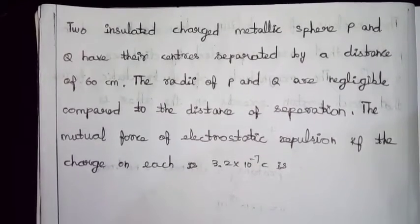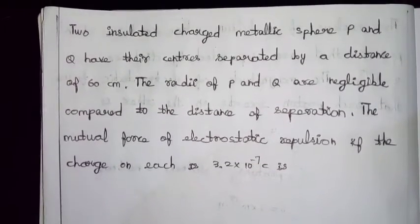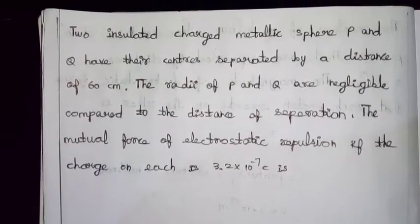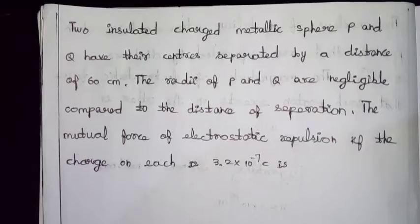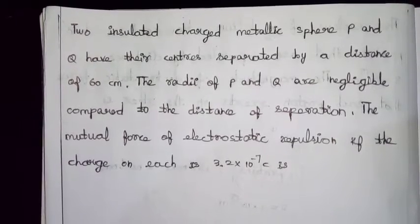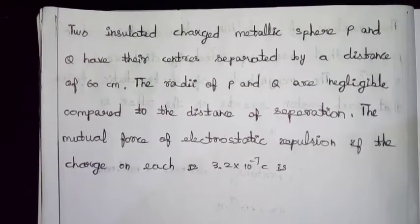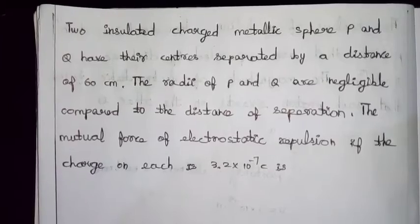Two insulated charged metallic spheres P and Q have their centers separated by a distance of 60 cm. The radius of P and Q are negligible compared to the distance of separation. The mutual force of electrostatic repulsion if the charge on each is 3.2 into 10 power minus 7 coulomb.